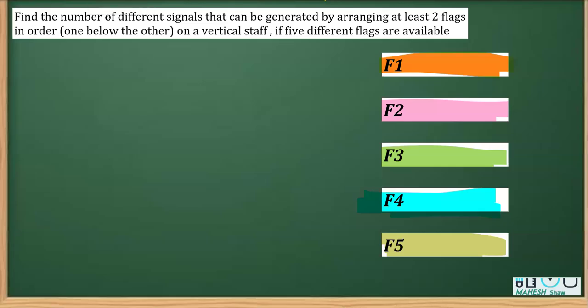In this question from the chapter permutation, the question says find a number of different signals that can be generated by arranging at least two flags, that means we are going to use minimum two or more than two flags out of five and placing one below the other from five different flags in a flag staff.